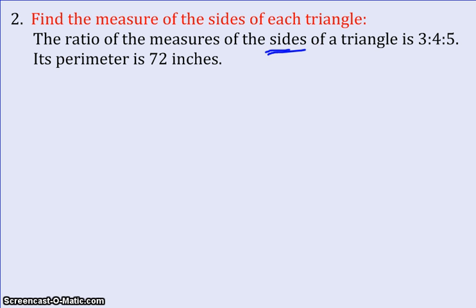Now this time it's not appropriate to set your ratio up equal to 180 degrees because it's the angles that add up to 180. Side lengths do not add up to 180 degrees. That's why we were given the perimeter because the side lengths of a triangle will add up to a perimeter.